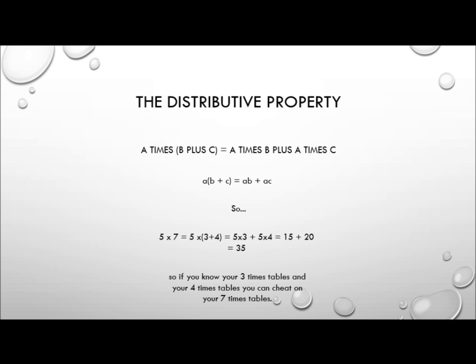What is arguably the coolest and most useful property? The distributive property — and you have to have both addition and multiplication in the same expression. A times (B plus C) is the same as A times B plus A times C. So if we've got something like 5 times 7, we can instead do 5 times (3 plus 4), which is the same as 5 times 3 plus 5 times 4, which is 15 plus 20, which is 35. So if you know your 3 and 4 times tables, you can use the distributive, associative, and commutative properties to cheat on your 7 times tables.